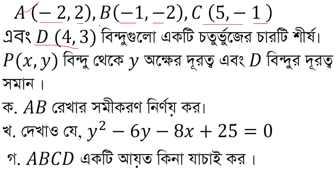For point P(x,y), we apply the formula. K-bindu with coordinates P(x,y). So the number we should work with is AB equal to 0 of 9.